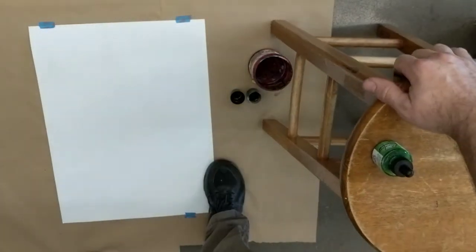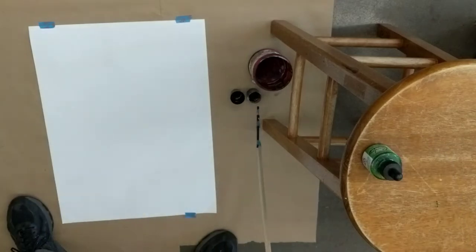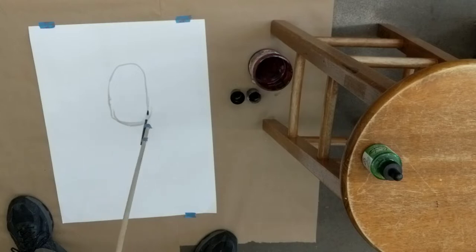I'm going to draw the bottle, this little ink bottle right here. I'm going to draw it with a brush and speedball black ink at the end of a four foot long stick.